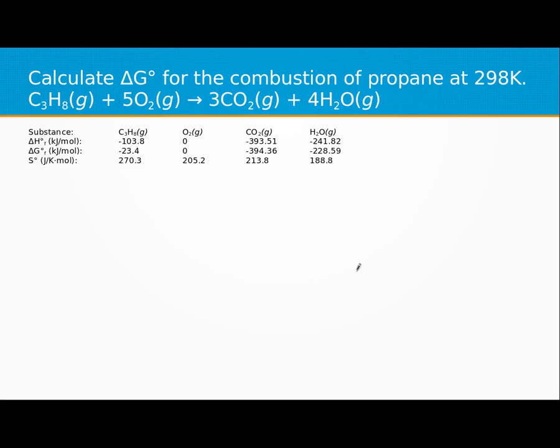All right, we want to calculate delta G for the combustion of propane at 298. Since it is 298 degrees, we can just go ahead and calculate the delta G using the delta G values.